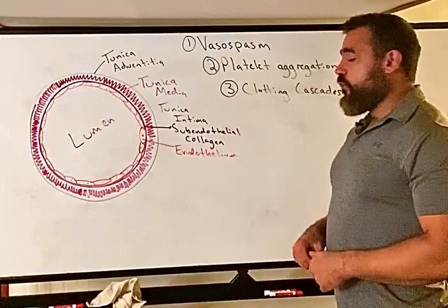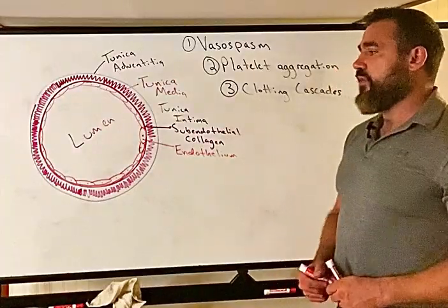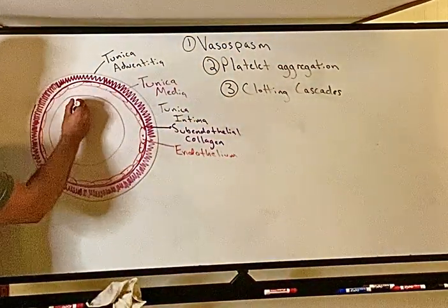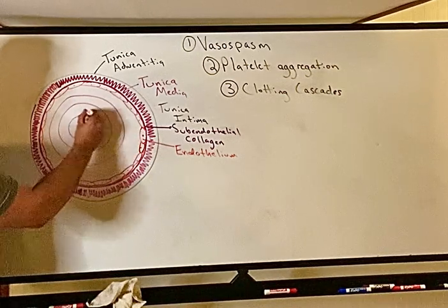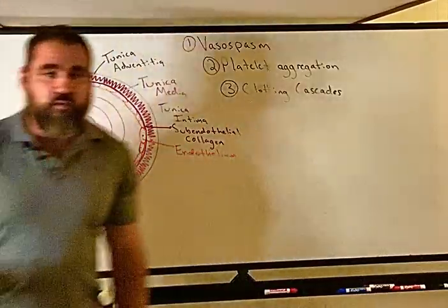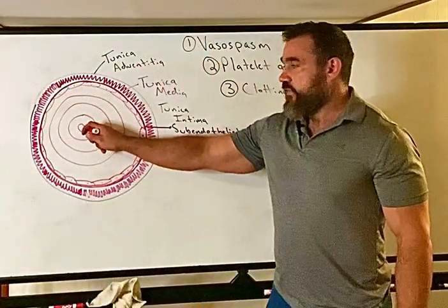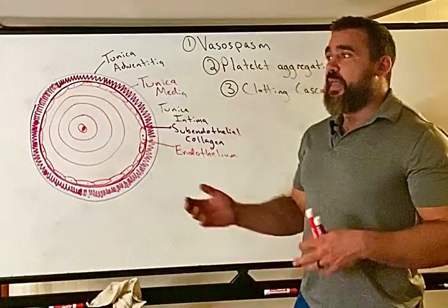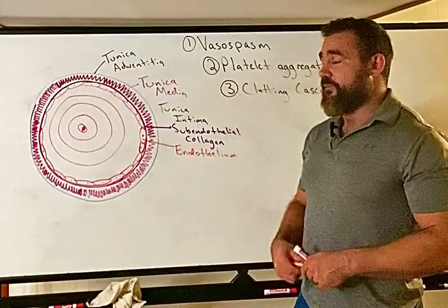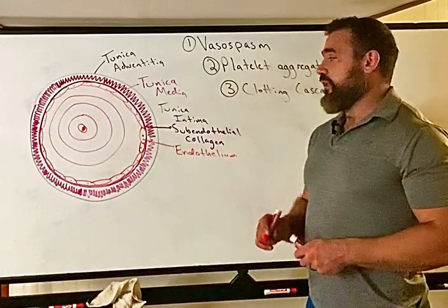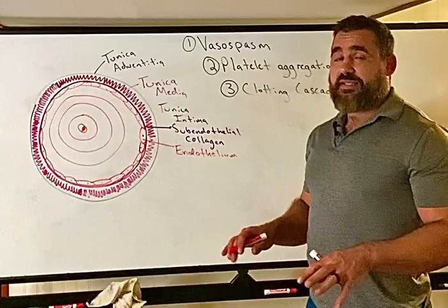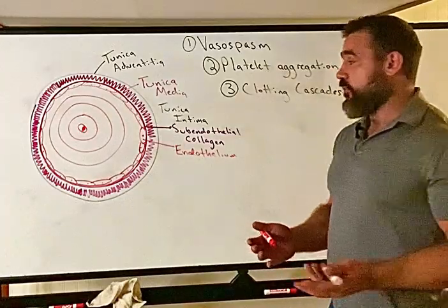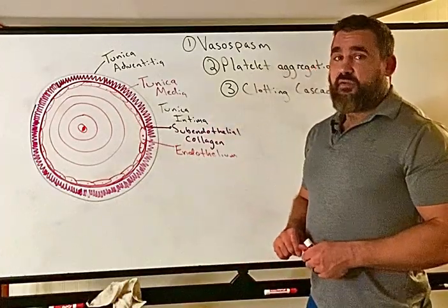Normal blood flow is laminar, meaning it flows in layers. Blood flows fastest in the center of the vessel, and slower near the endothelium due to drag and friction. The endothelium is important because it prevents abnormal clotting — it provides a smooth surface and produces things like nitric oxide and prostacyclin, which prevent clotting and promote vasodilation.